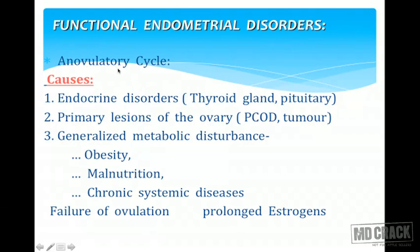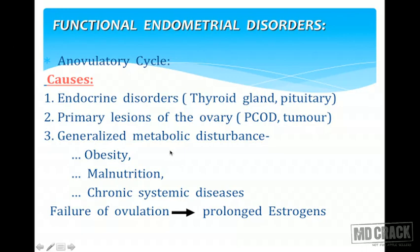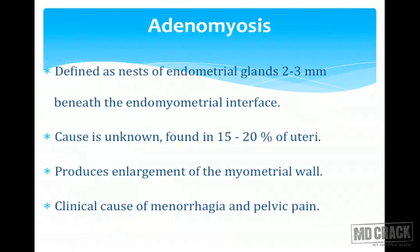Dysfunctional uterine bleeding is most commonly caused by anovulatory uterine cycles. Other important causes include endocrine disorders like thyroid conditions (hyperthyroidism, hypothyroidism) and pituitary adenomas, polycystic ovarian disease causing hyperestrogenic status, estrogen-secreting tumors like granulosa cell tumors, and generalized metabolic disturbances such as obesity and malnutrition. Failure of ovulation results in excessive estrogen effect on the endometrial surface, causing bleeding.